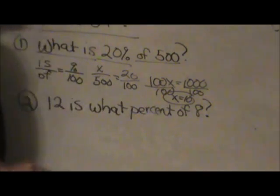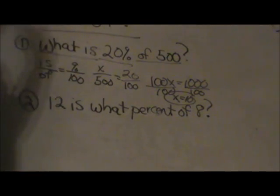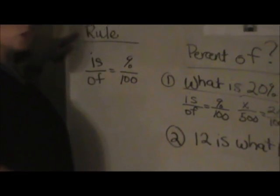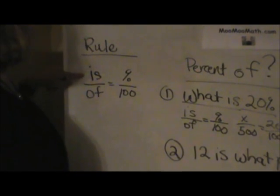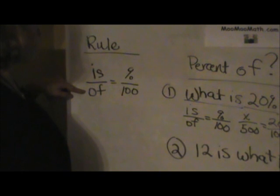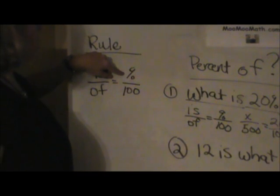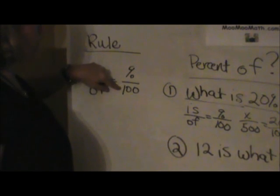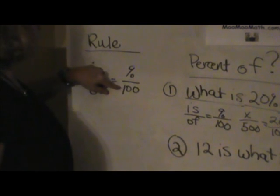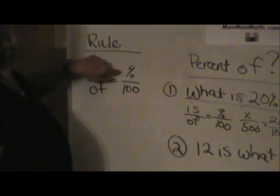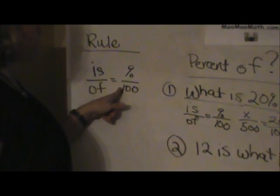What rule did I use to solve that? Once you get the rule down it's really pretty easy. So the rule is simply this. You remember the formula: is over of is equal to the proportion percent over 100. So what you have to identify is where is my variable? Is it the is, the of, or the percentage because you always have a 100.